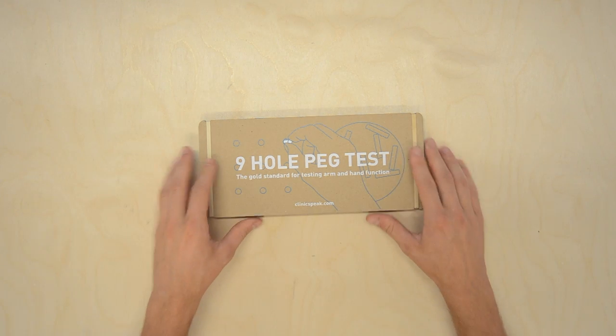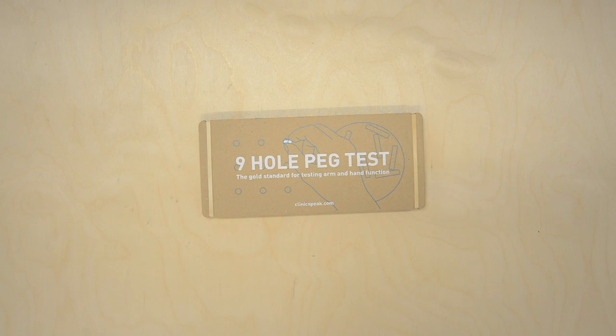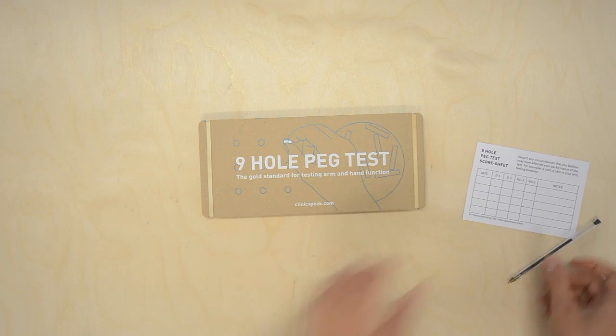You will need a 9-hole peg test, a stable table, a score sheet and pen, and a stopwatch.